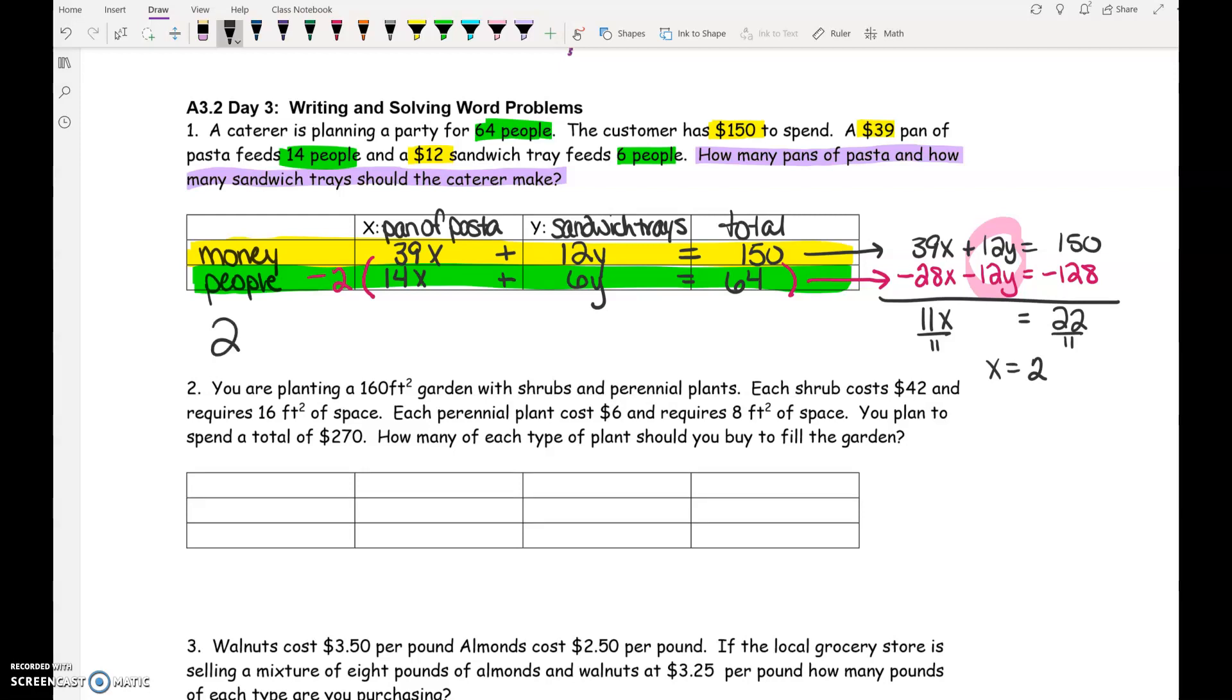X is pans of pasta. So one part of our answer is 2 pans of pasta. Now we have to figure out how many sandwich trays. How do we figure out how many sandwich trays? We need to plug in X equals 2 into one of the original equations. I think I'm going to pick the 14X plus 6Y equals 64. And I figured out that it would be 6 sandwich trays.